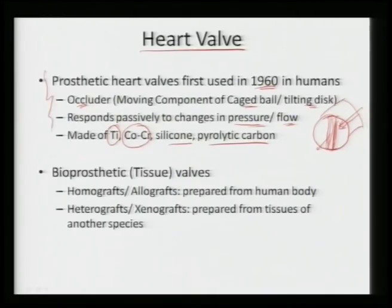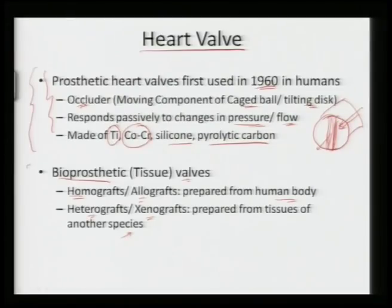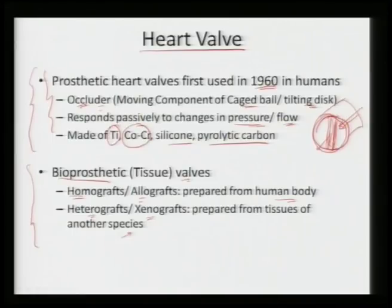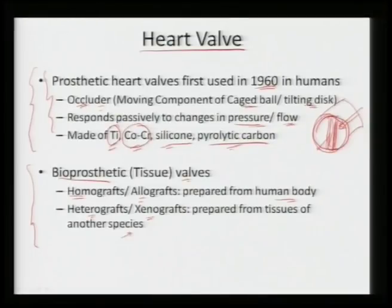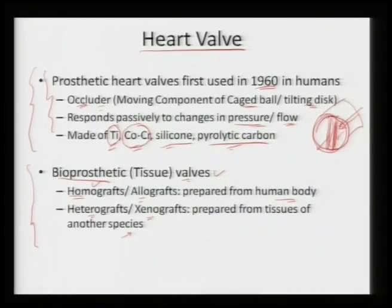Heart valves can also be bio-prosthetic or tissue valves, which are more natural. These can be prepared from homografts or allografts from the human body, or hetero-grafts or xenografts prepared from tissues of another species. Synthetic valves require an occluder — a moving disc component — made of titanium, cobalt-chromium, silicone, or pyrolytic carbon. Bio-prosthetic valves can be either allografts or xenografts depending on the source tissue.